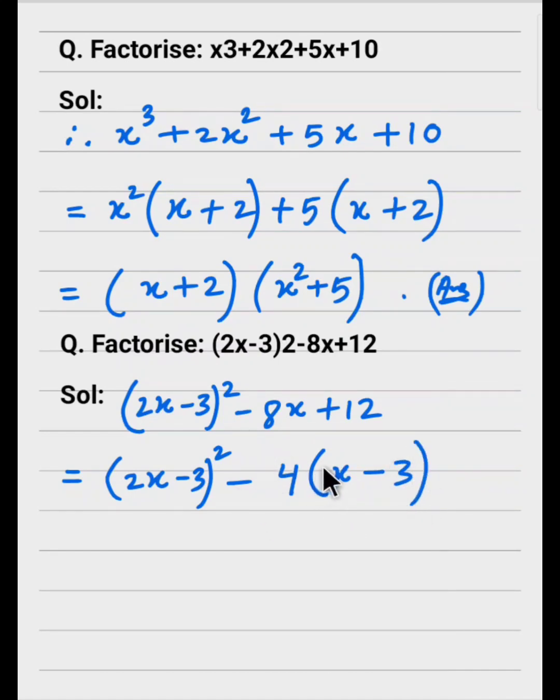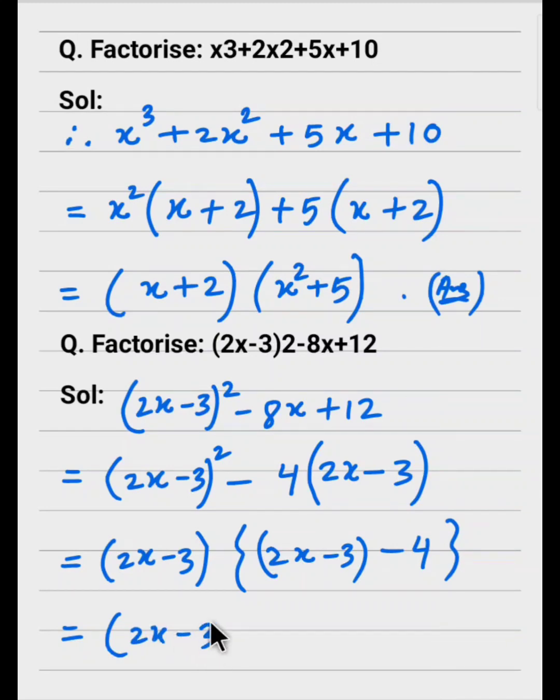Now I will take (2x-3) common. So (2x-3) times (2x-3 minus 4). That equals (2x-3) times (2x-7). So that is the answer.